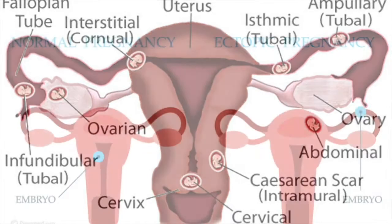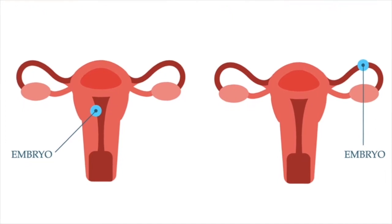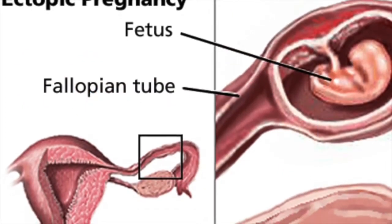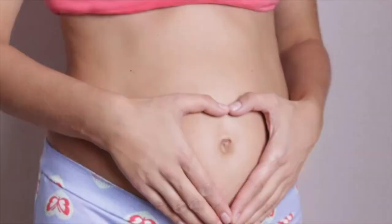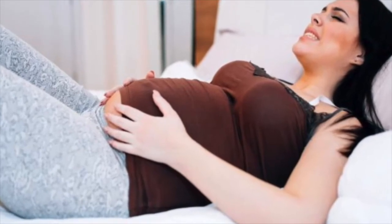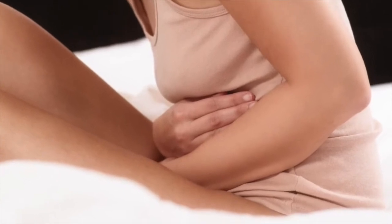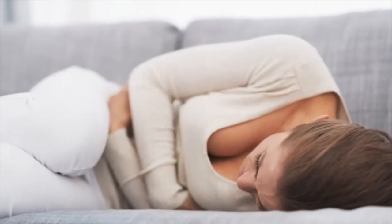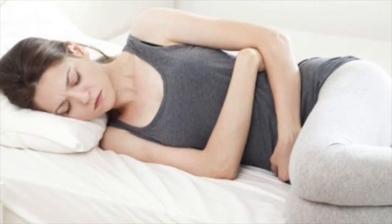How is an ectopic pregnancy treated? An ectopic pregnancy may be treated in any of the following ways. Methotrexate may be given, which allows the body to absorb the pregnancy tissue and may save the fallopian tube, depending on how far the pregnancy has progressed. If the tube has become stretched or has ruptured and starts bleeding, part or all of it may have to be removed, and emergency surgery is necessary.